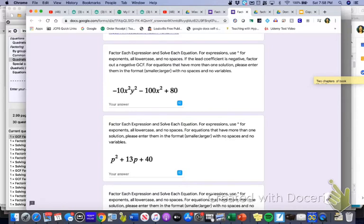When I simplified this first expression, I got 10 and then a negative x to the second, y to the second, minus 10x squared plus 8 when I simplified it, or I keep saying simplified, when I factored it.